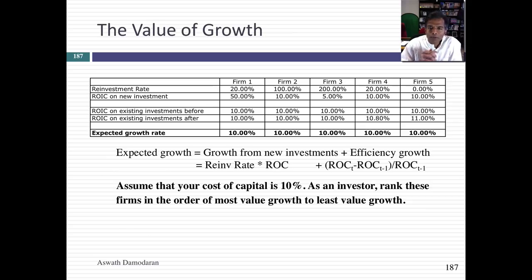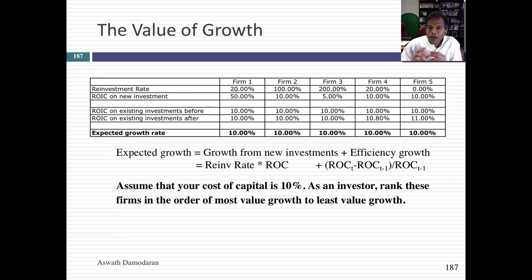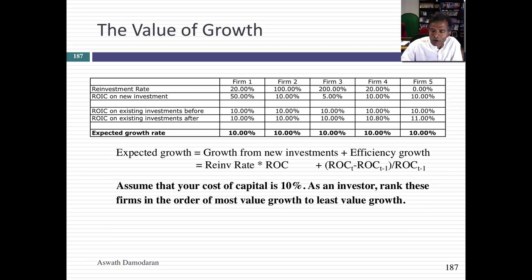Let's do a test. Suppose I came to you with five companies that all have the same expected growth rate but get there in very different ways. Firm one has a 20% reinvestment rate and a 50% return on capital with no change. Firm two has a 100% reinvestment rate and a 10% return on capital. Firm three has a 200% reinvestment rate and a 5% return on capital. Firm four has a 20% reinvestment rate and a 10% return on capital but expects ROC to go from 10% to 10.8% next year. Firm five has no reinvestment but improves return on capital.